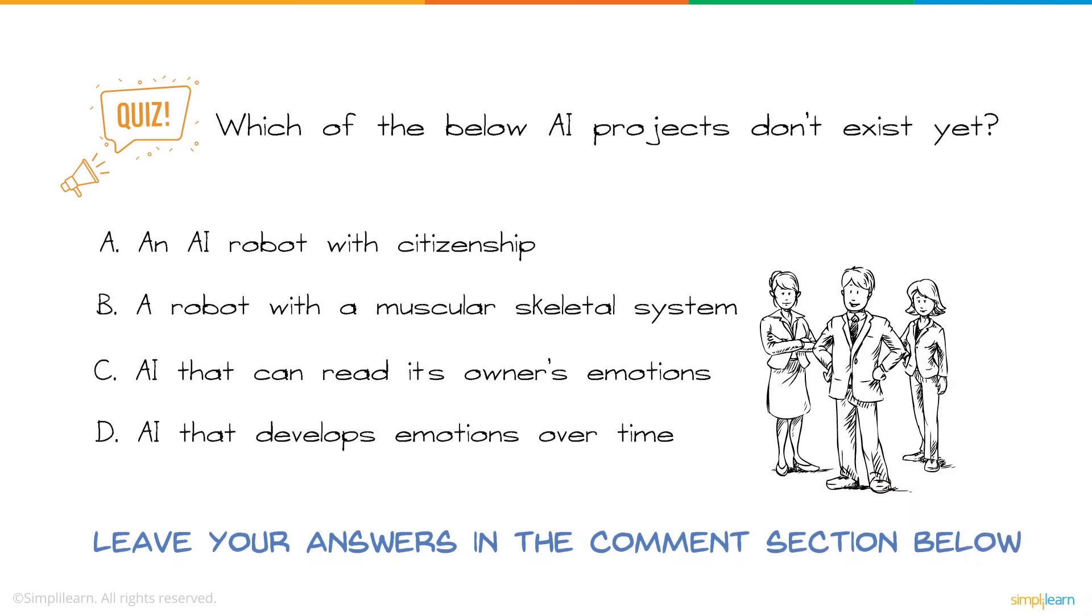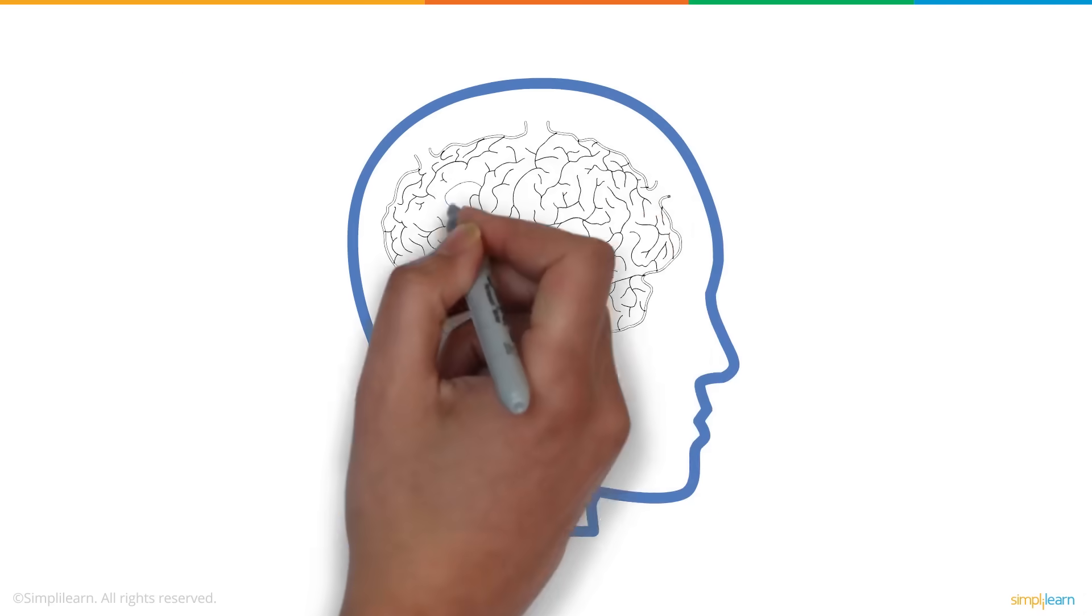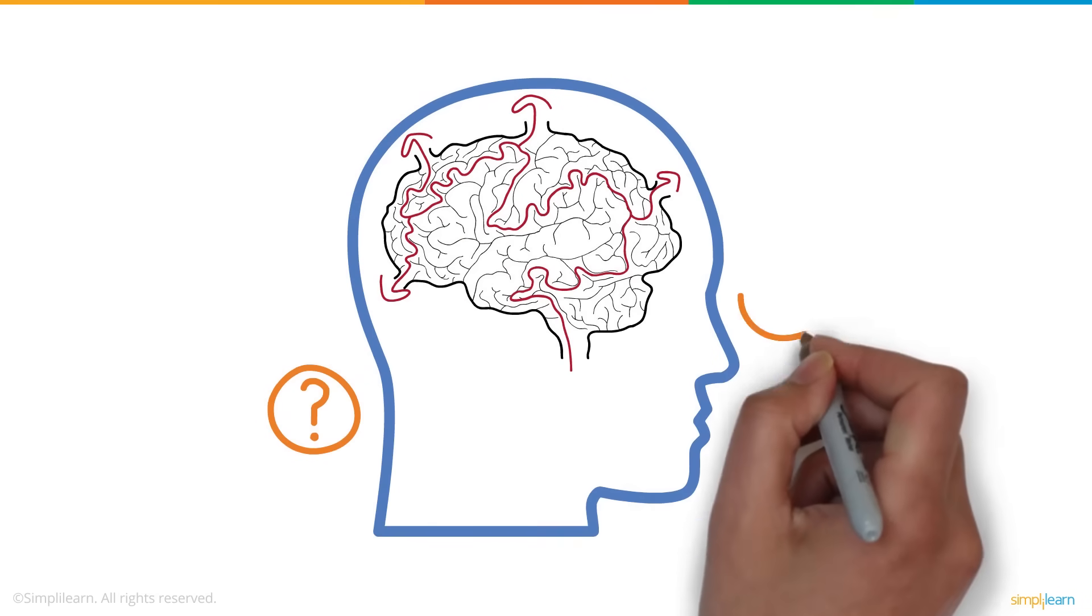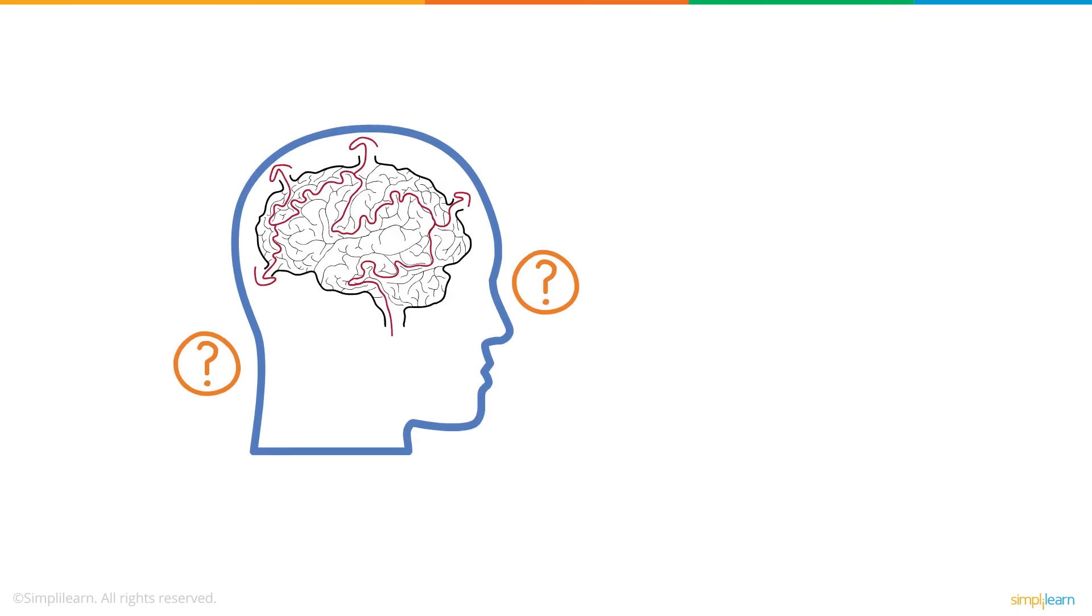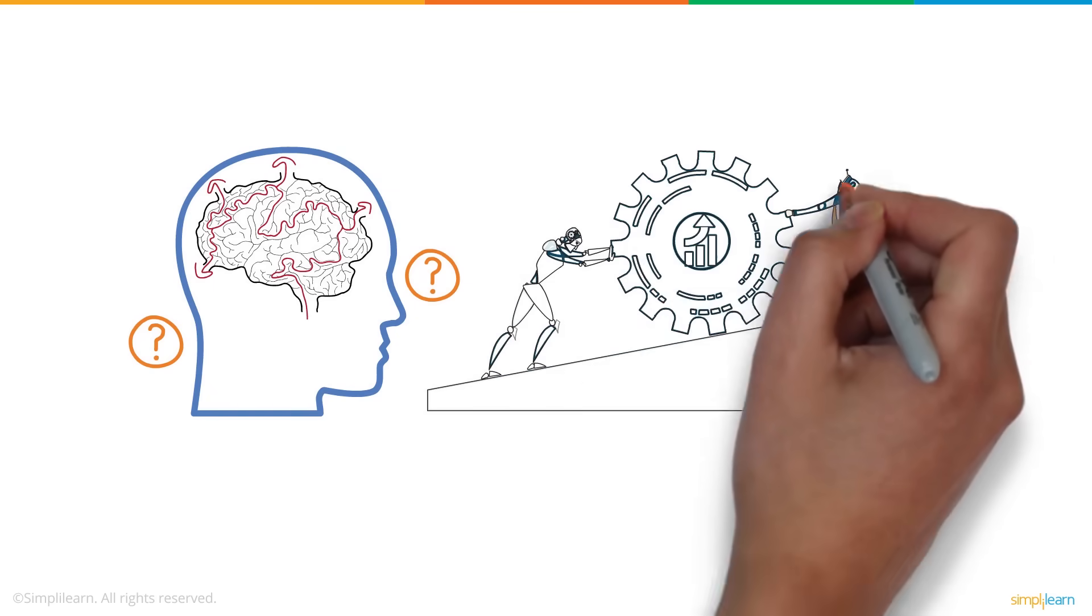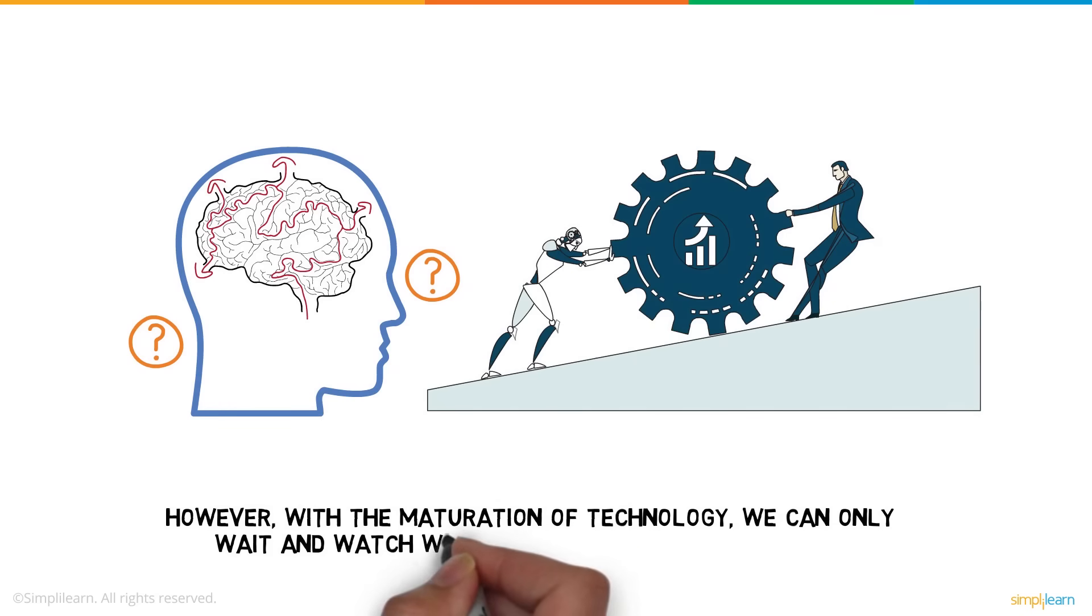Three lucky winners will receive Amazon gift vouchers. Since the human brain is still a mystery, it's no surprise that AI too has a lot of unventured domains. For now, AI is built to work with humans and make our tasks easier. However, with the maturation of technology, we can only wait and watch what the future of AI holds for us.